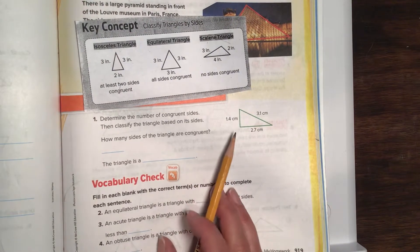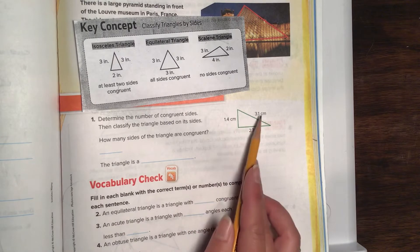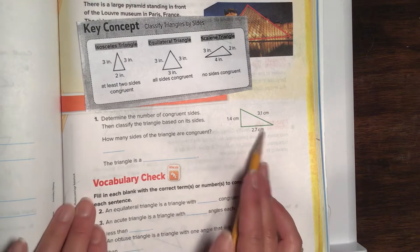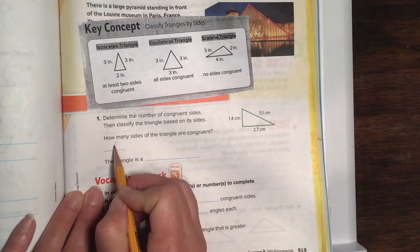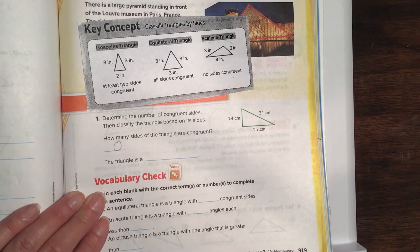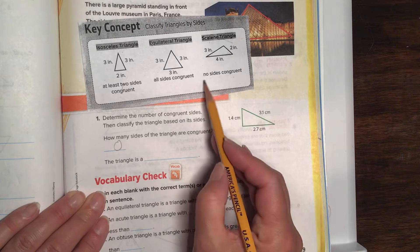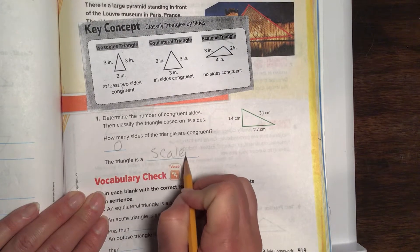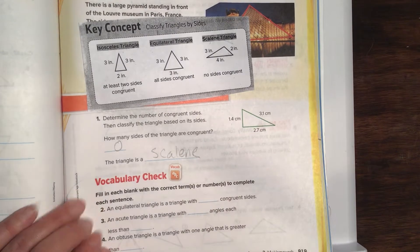How many of the sides of this triangle are congruent? Well, let's look. Well, what do you think? How many are congruent, friends? That's right. So based on that answer, what is our triangle's classification? That's right. Scalene. Nicely done.